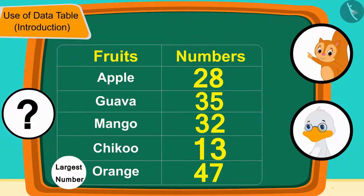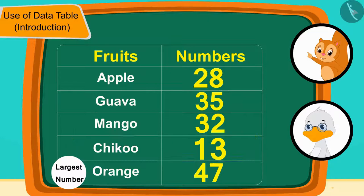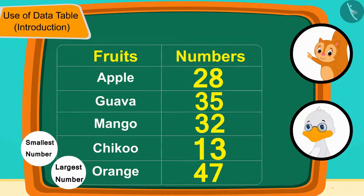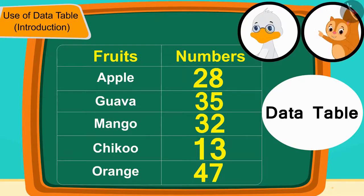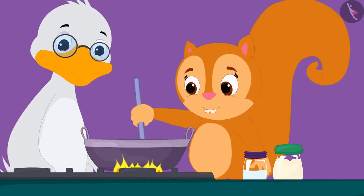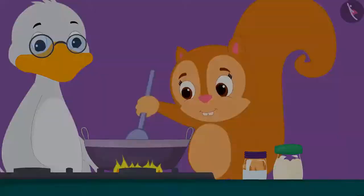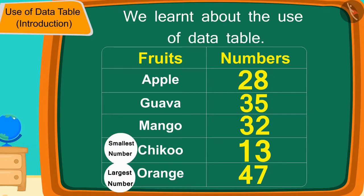Now, can you tell which fruit is the smallest in number? Children, in this way you can get various kinds of information by using the data table. Uncle too, with the help of Chanda's table, found that the number of oranges was the largest. Chanda and uncle together started preparing to make orange barfi. Children, in this lesson we learned about the use of data table. In the next video, we will learn more about it by some interesting examples.